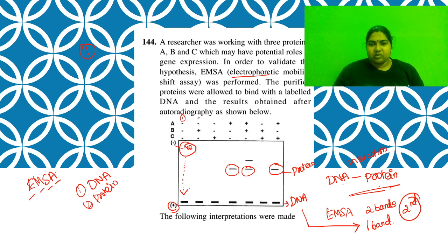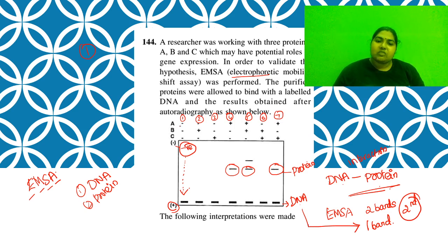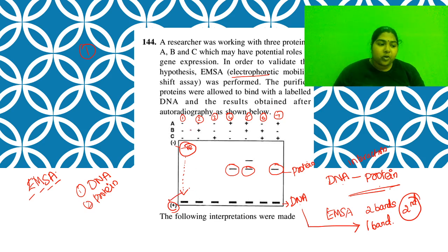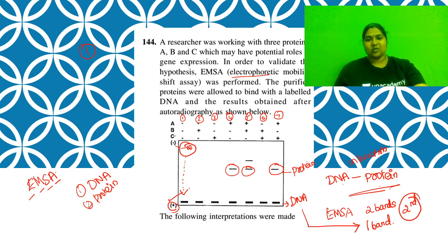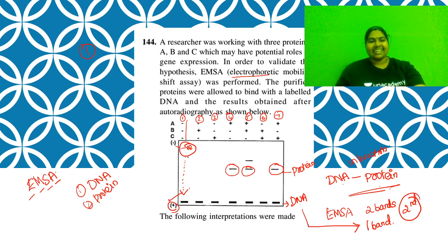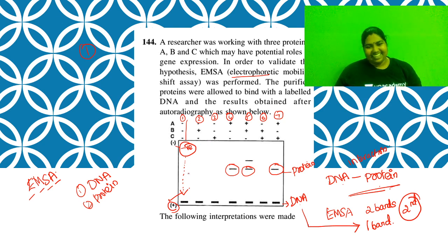There are seven lanes in this experiment. In the first lane, you have DNA but no protein - proteins A, B, and C are all minus. That is why you see only the DNA band at the bottom. You didn't see any extra band because there is no other protein present.